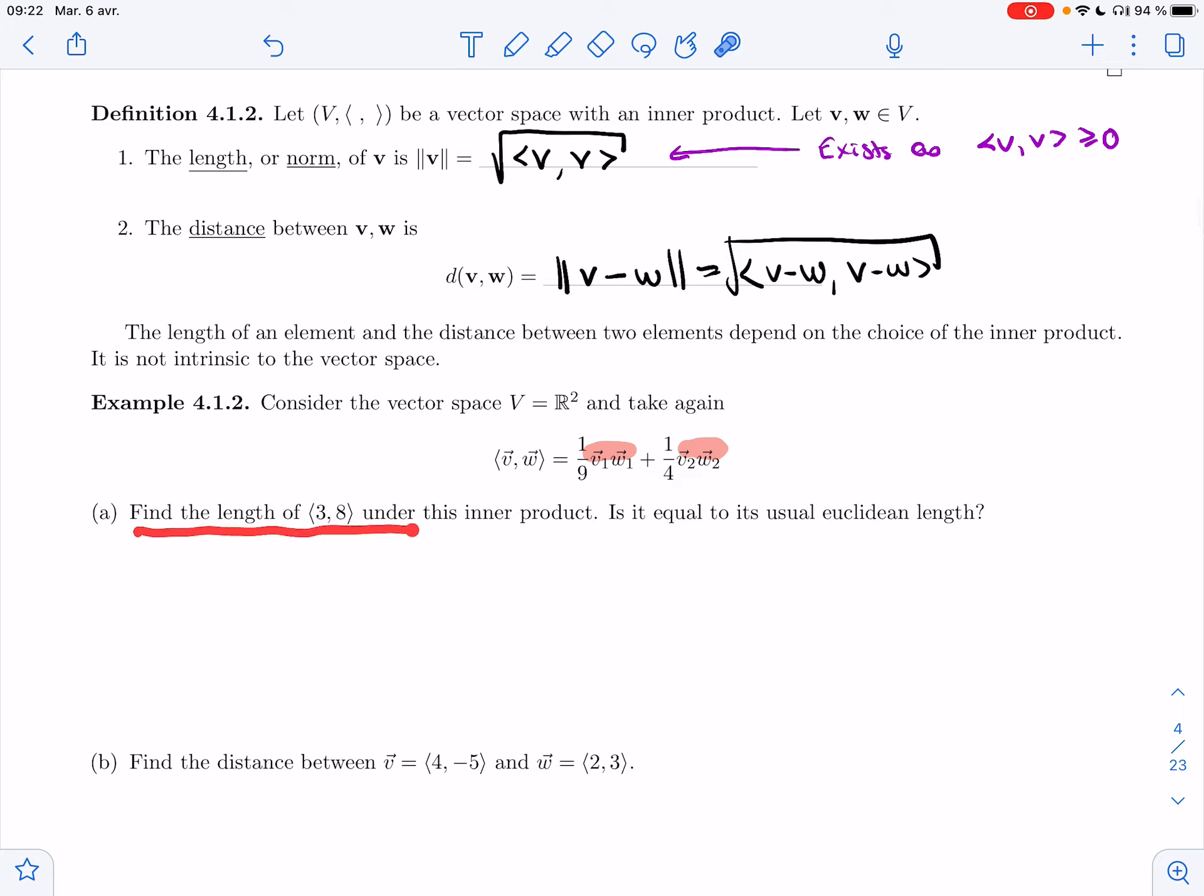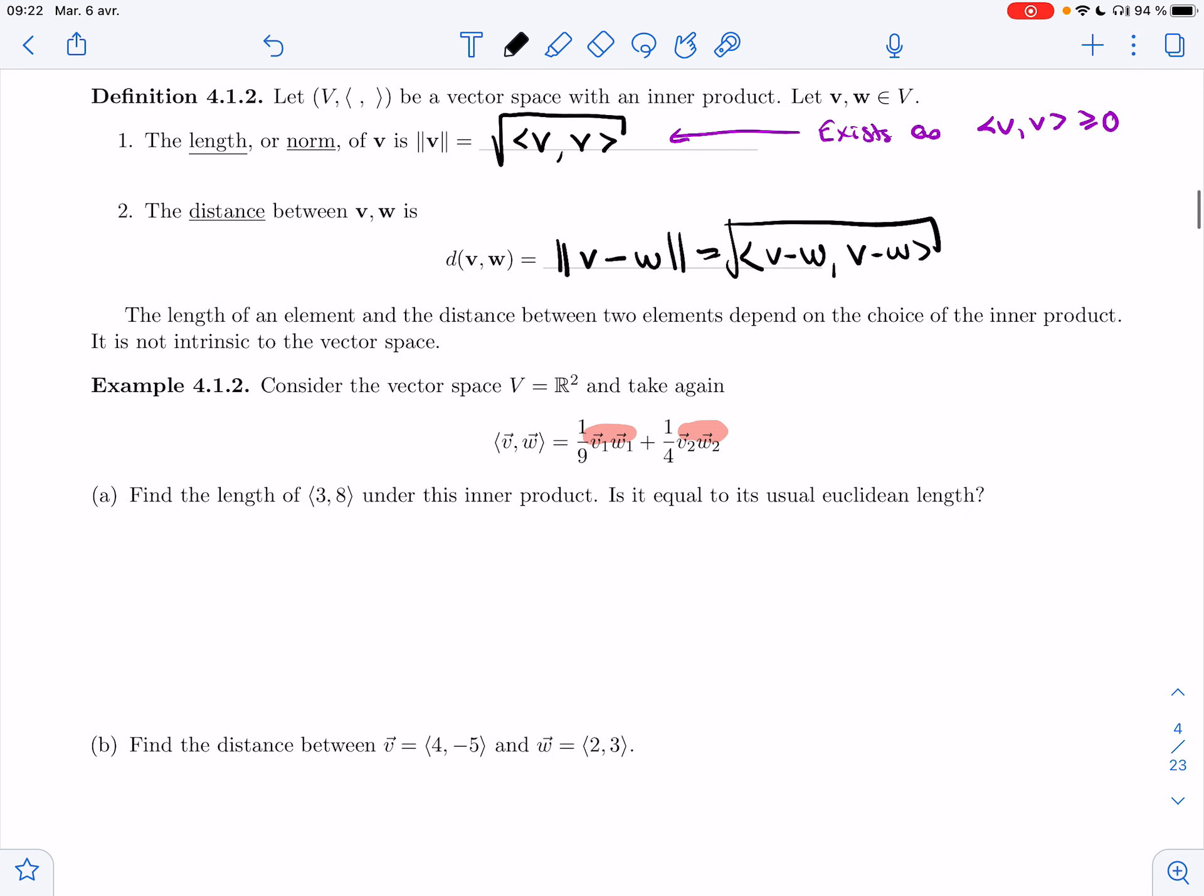So find the length of (3, 8) under this inner product. So I need - so this is v - I need to compute <v, v>. So that's one ninth times 3 times 3 plus one fourth times 8 times 8.